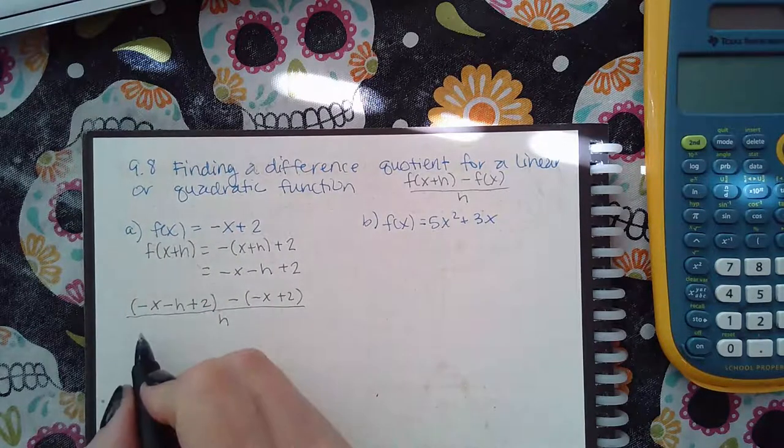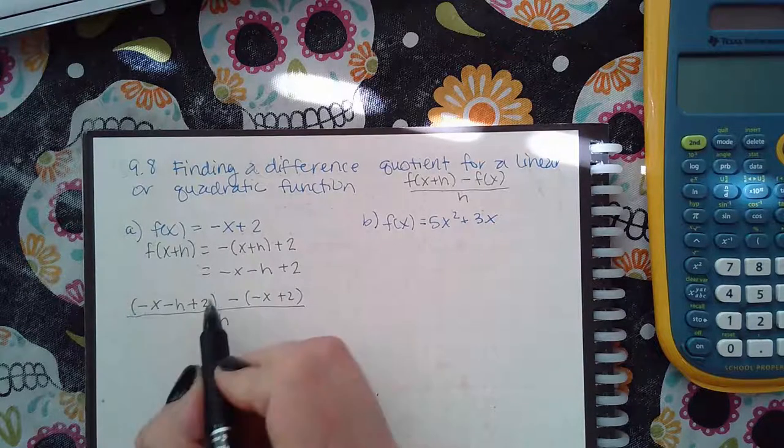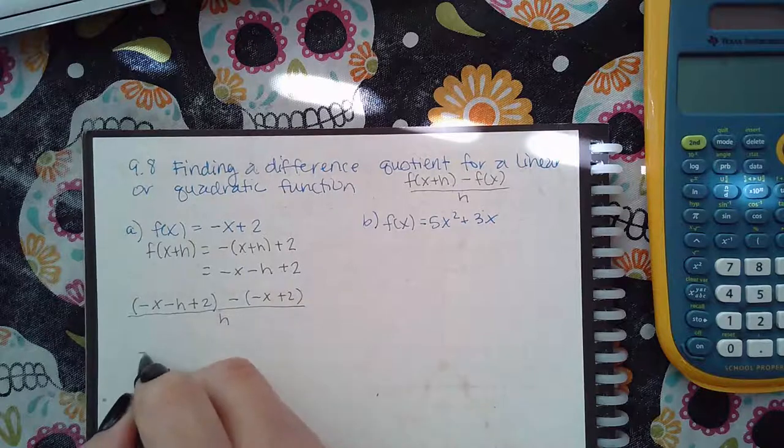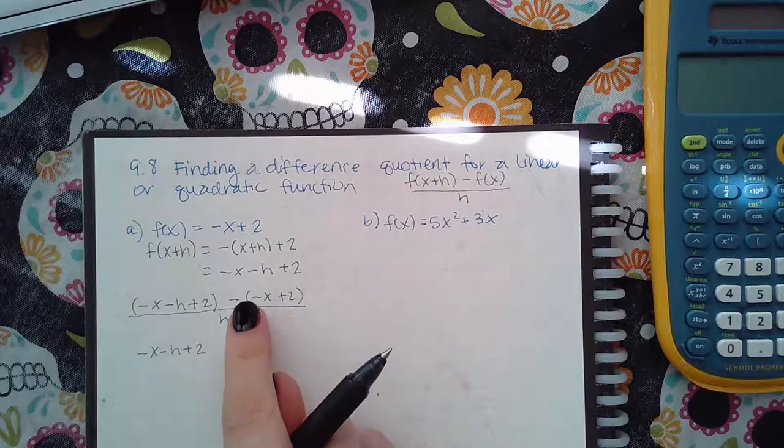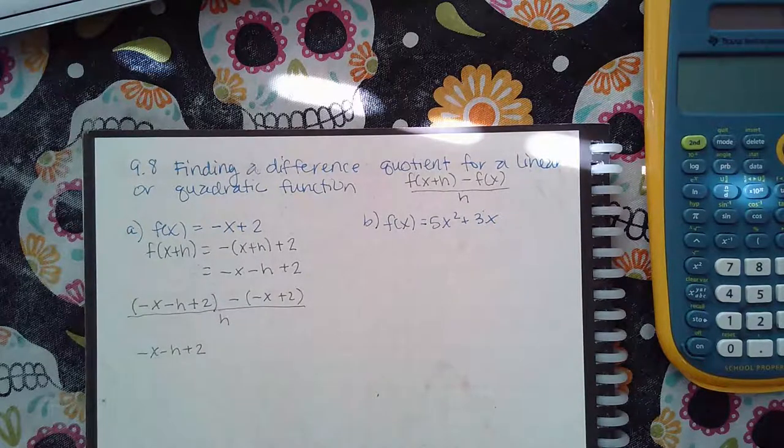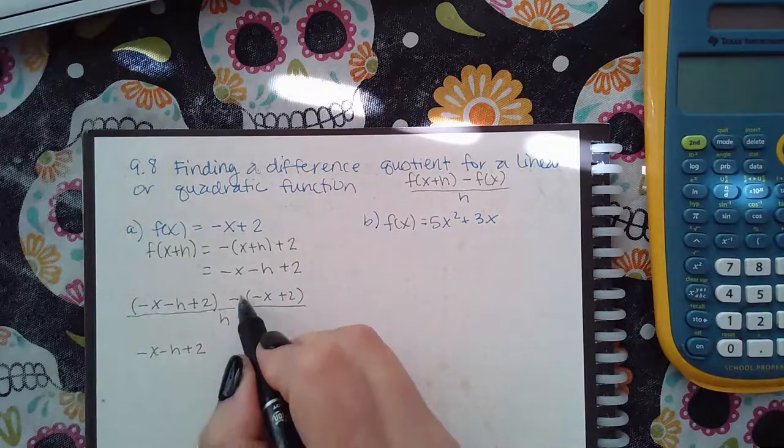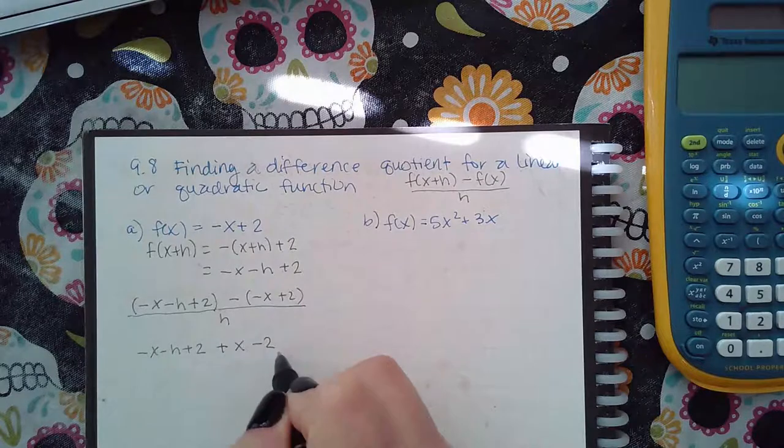Now if I go ahead and simplify this, now notice there's no number to multiply in the front, and there's no exponent here to apply. So I don't really need that first set of parentheses. However, in the second set of parentheses, notice it does have a negative in front, and I do have to multiply that. So when I do multiply this negative, I get positive x and a negative two.